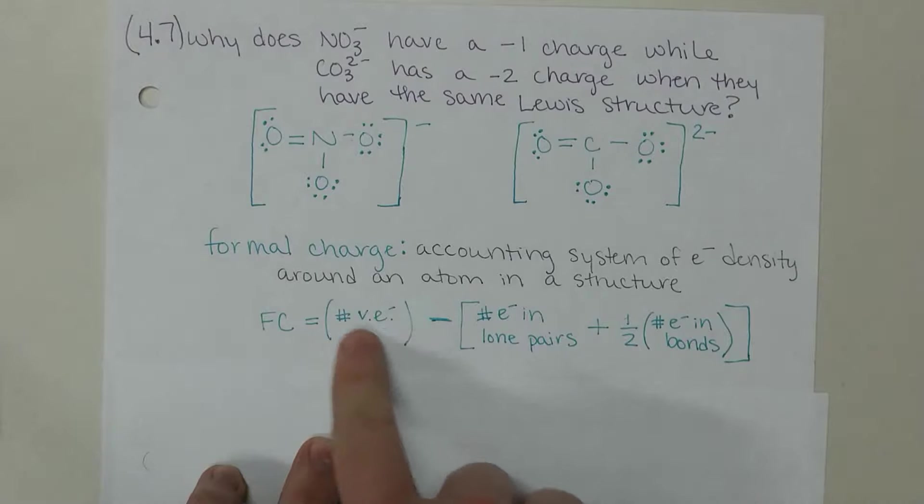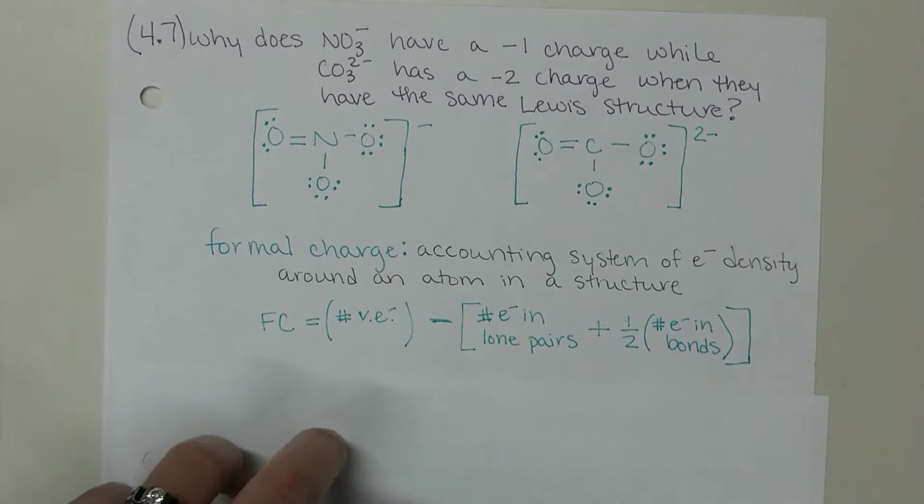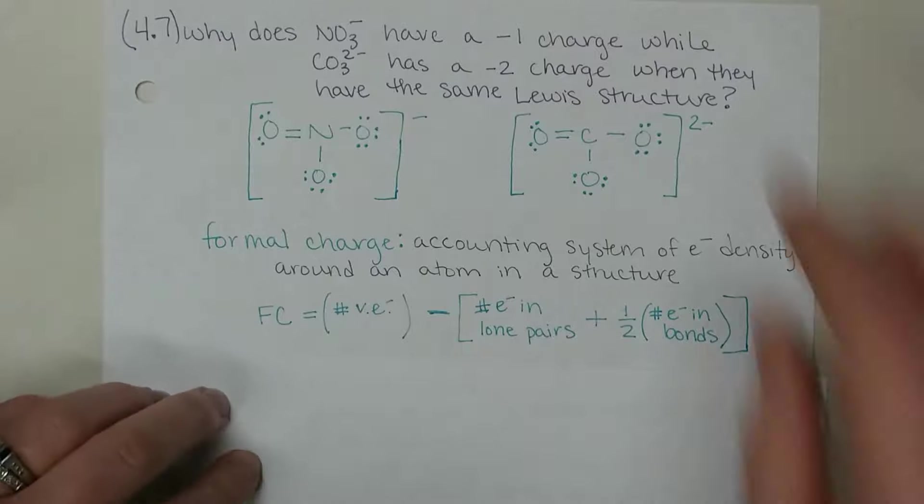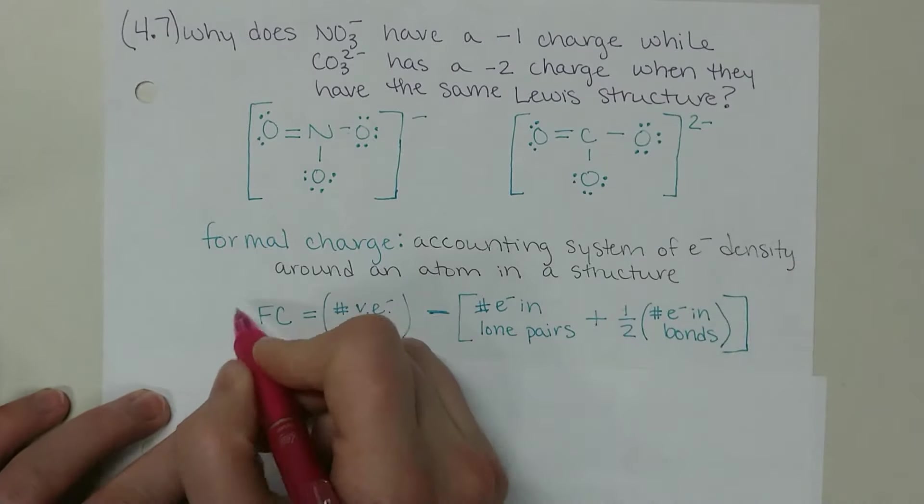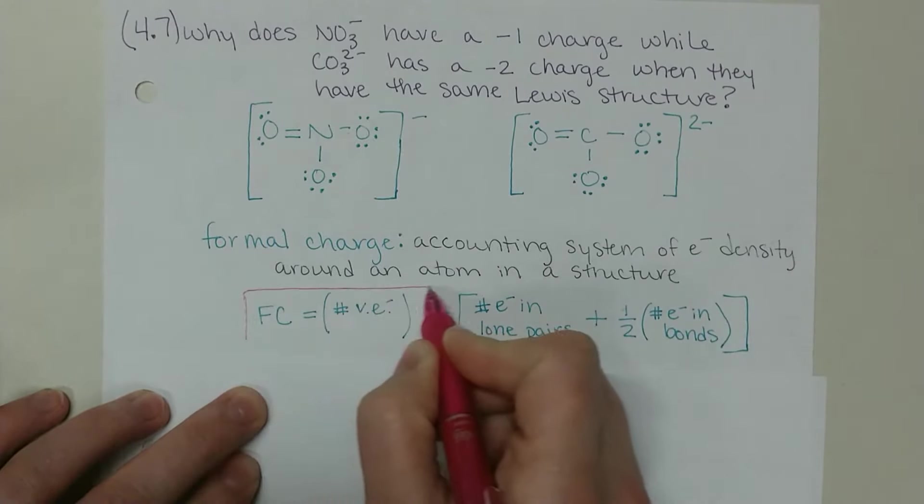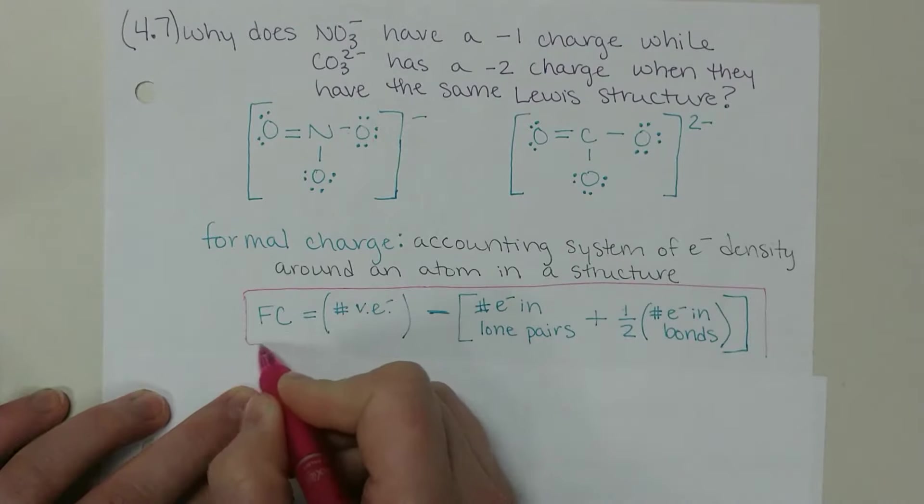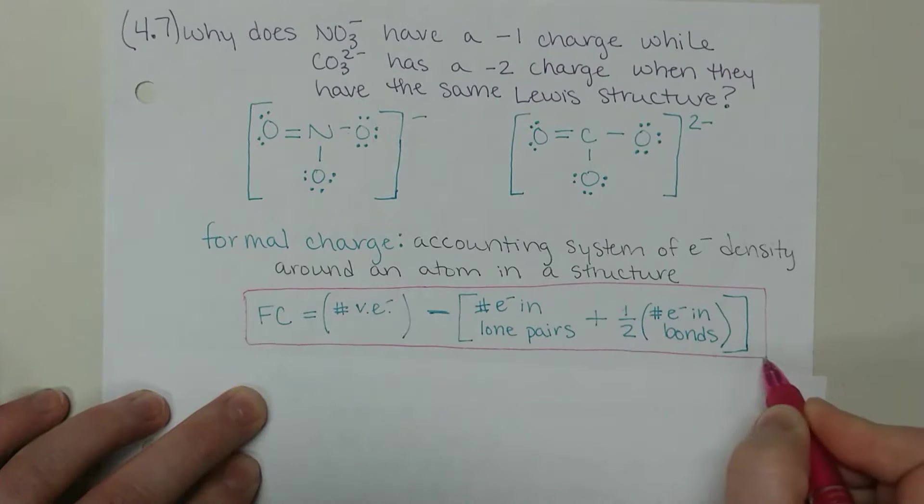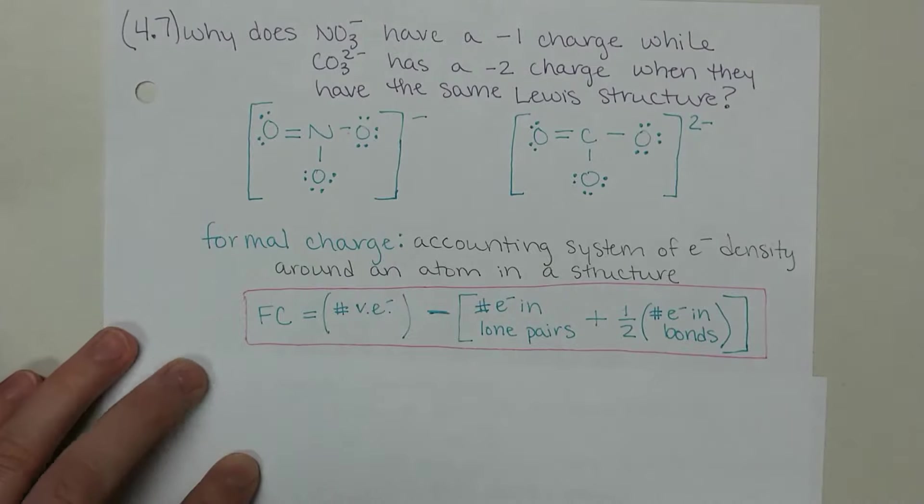How I think of this is the valence electrons minus the number of dots on that atom - that minus gets distributed - so subtracting the number of dots from the valence electrons and then the number of lines from those valence electrons. That's how I remember the equation. This is an equation you will need to know because we need to represent where our formal charges occur on our Lewis structures.